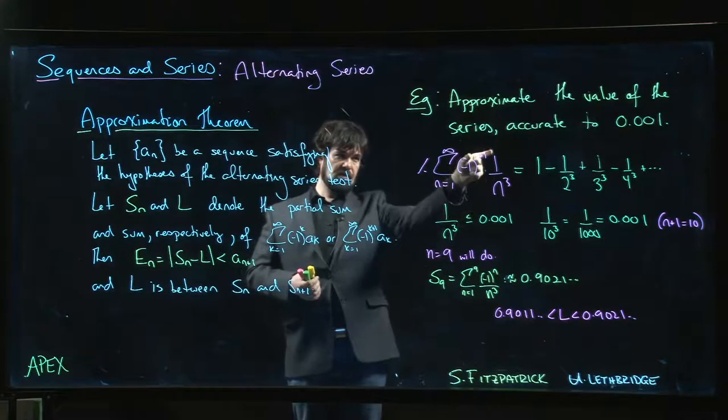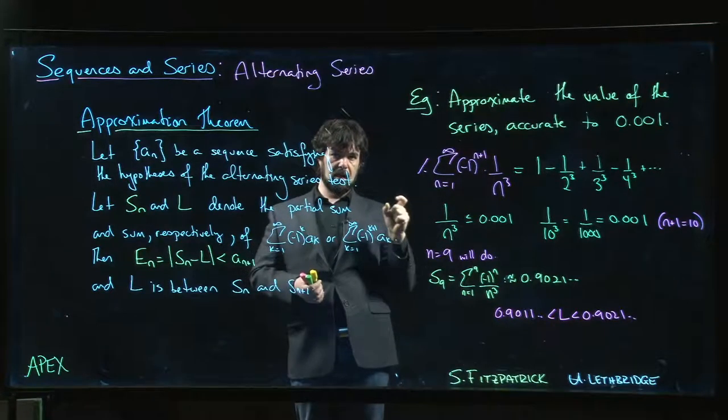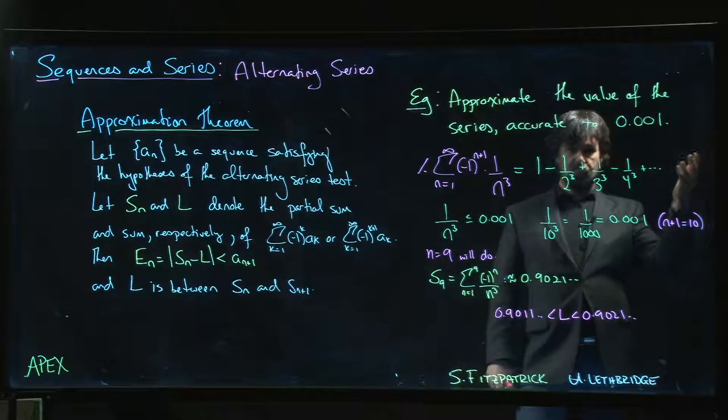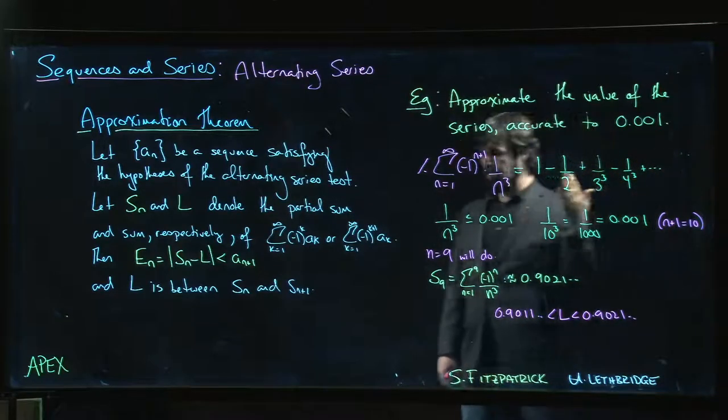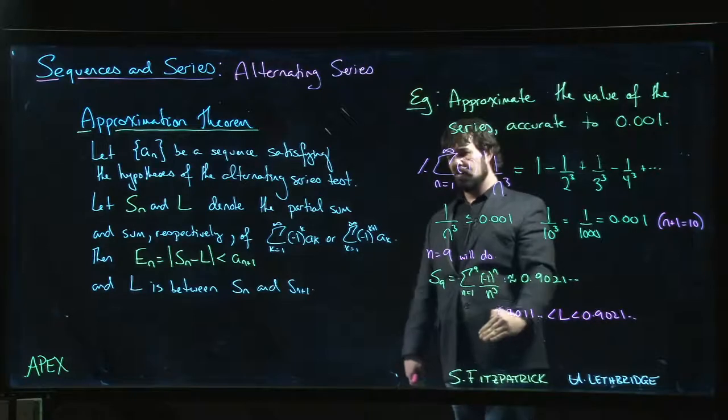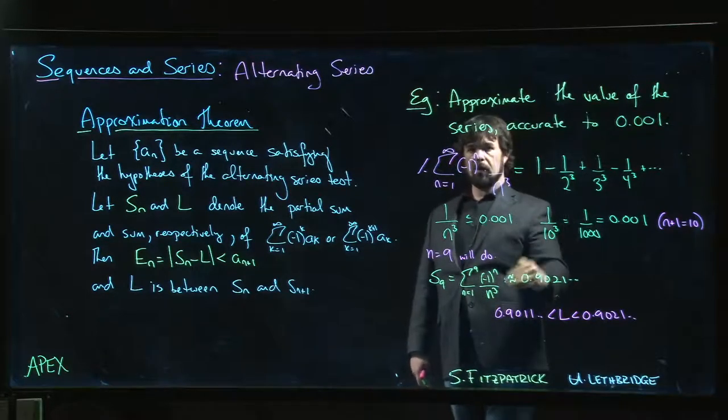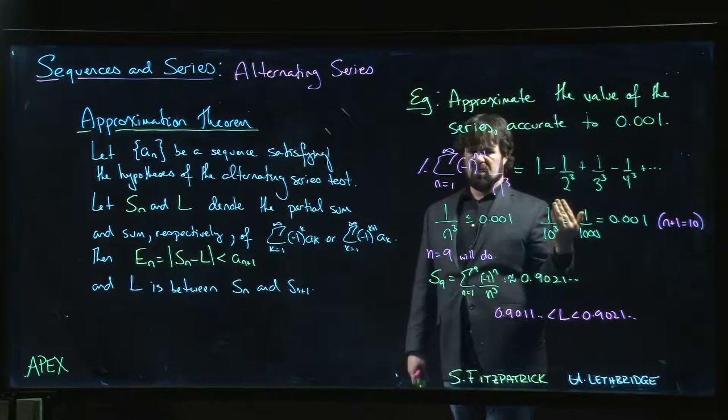And you just run that down the spreadsheet until you see the term that's as small as you want it, until the size is within the level of accuracy that you want - 0.001 or maybe 0.0001, however many decimal places you want. Run that down a spreadsheet till the value is small enough and then you just sum - you just add them up, it's easy enough.